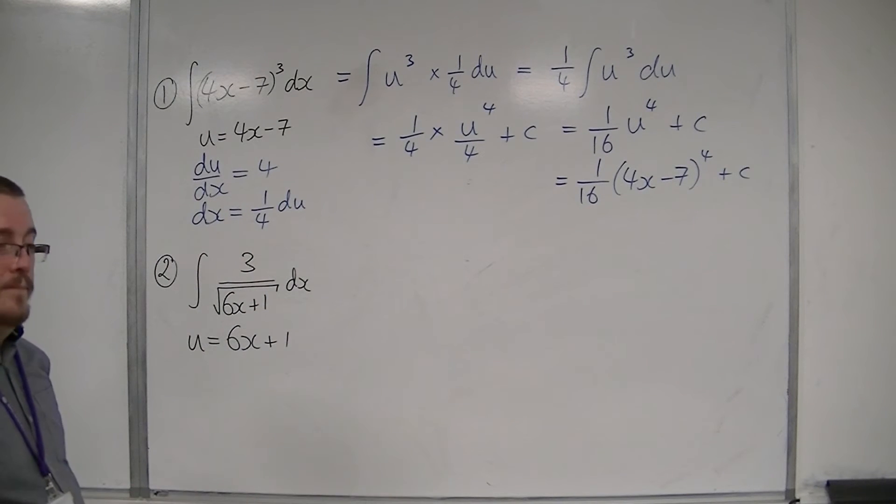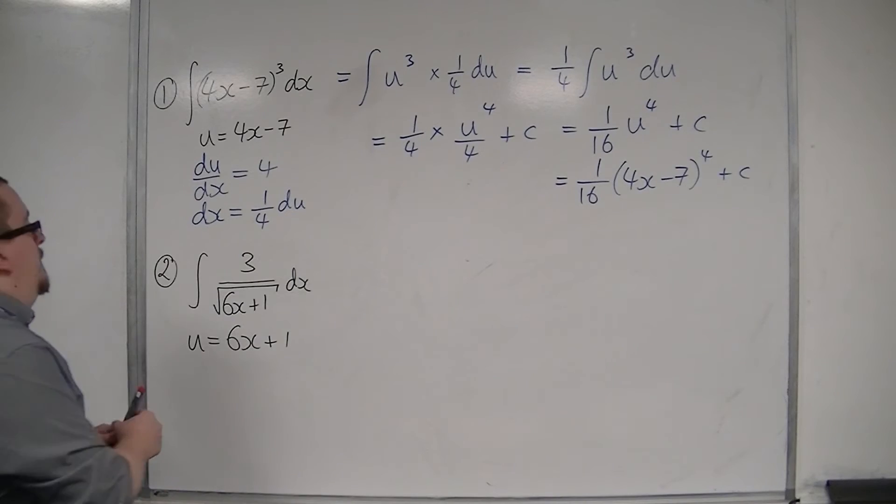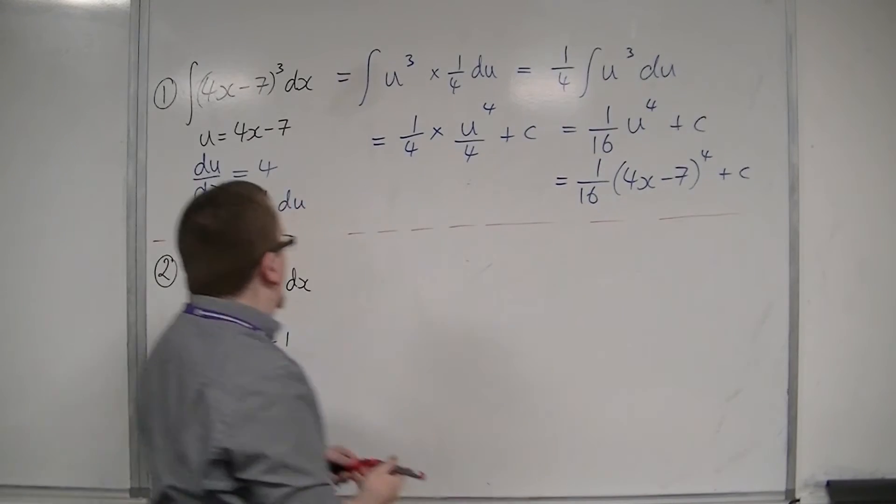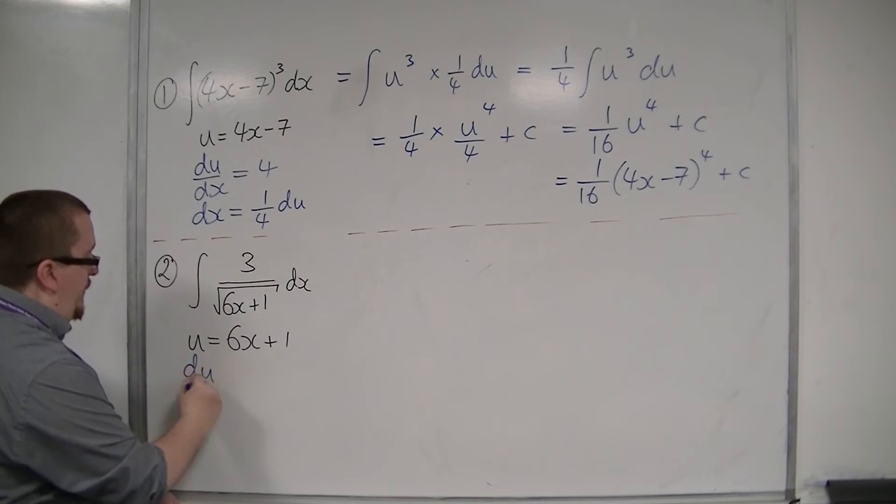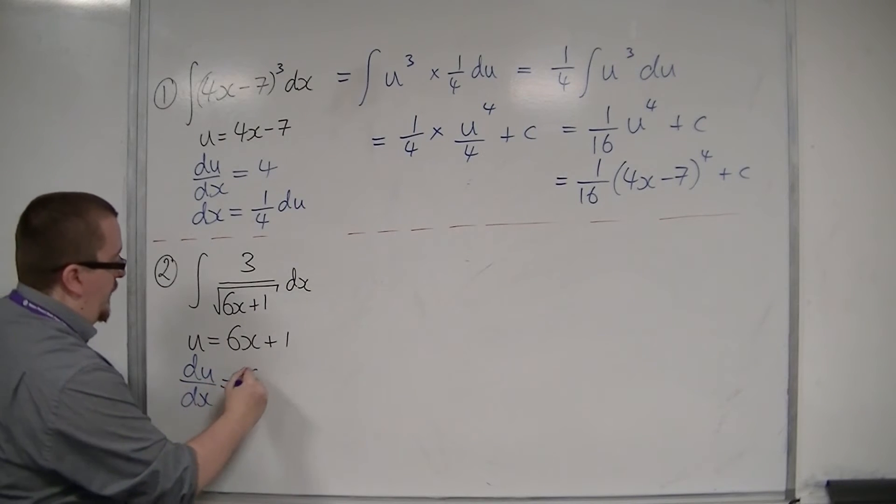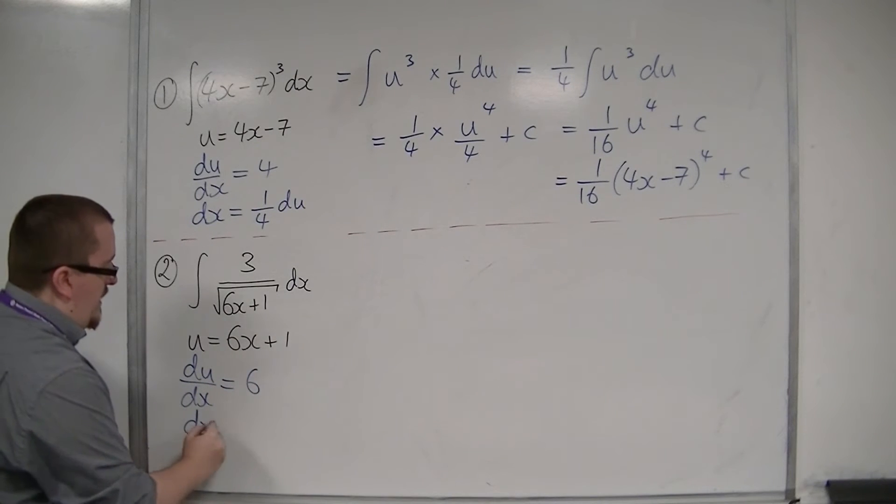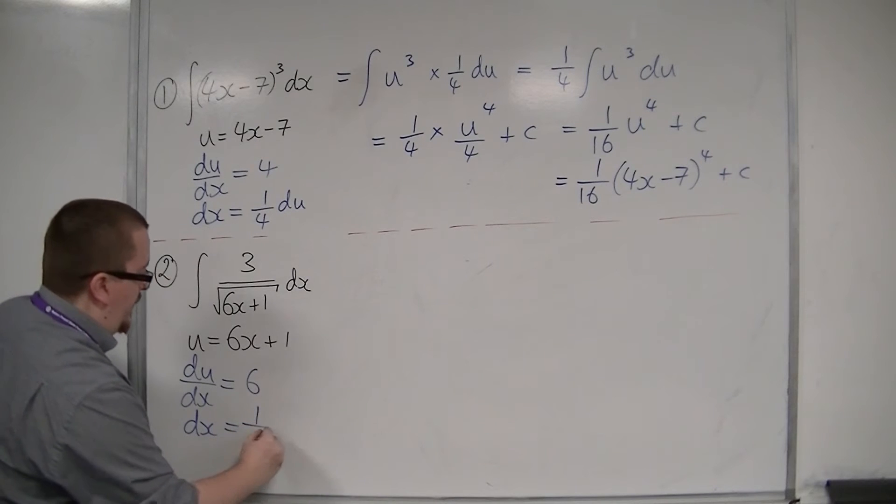So that's the first one. Now let's look at the second one. So let's draw a line out of that one. So, u is equal to 6x plus 1, so we find du by dx first. That's 6. Rearrange that to get dx equals, so that's 1 6th du.